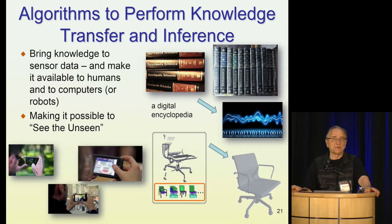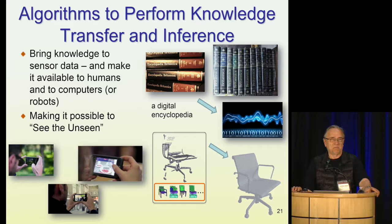For example, you can take a partial scan of a chair and complete it because you have an understanding of what chairs like that look like from prior data. This is the context — now let me say a few things about some key steps in this pipeline. One is how to acquire knowledge, and one aspect of that is part knowledge.